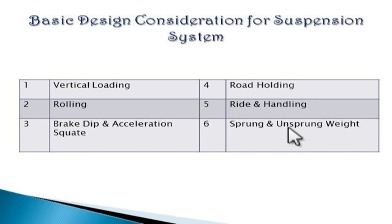There are six main design considerations for the suspension system. The first one is vertical loading, which includes basically the total load of the vehicle body as well as the occupants inside the vehicle.